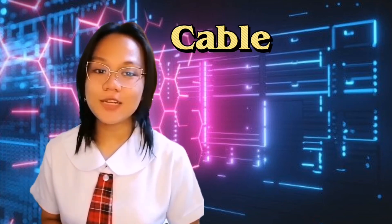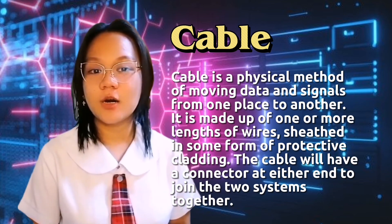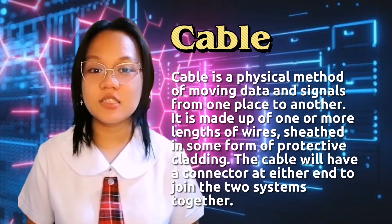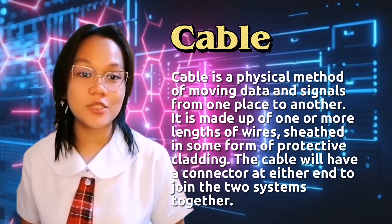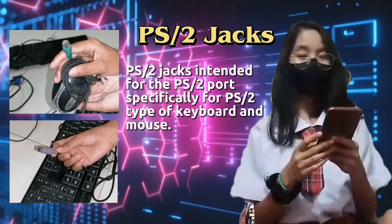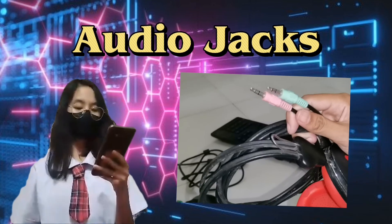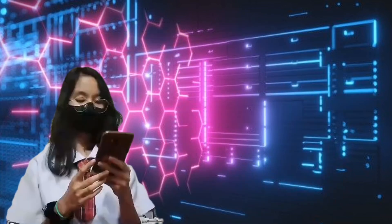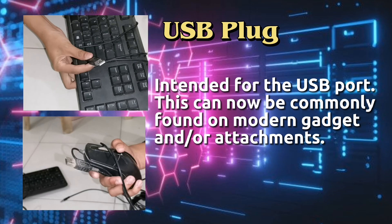Moving on from the ports, we'll present to you different types of cables. A cable is a physical method of moving data and signals from one place to another. It is made up of one or more lengths of wire, sheathed in some form of protective cladding, with a connector at either end to join two systems together. We have here the PS2 jacks intended for the PS2 port, specifically for PS2 type keyboards and mice. We also have here the audio jacks intended for the audio and microphone port, and the monitor jacks intended for the VGA port. The USB plug is obviously intended for the USB port and can now be commonly found on modern gadgets and attachments.